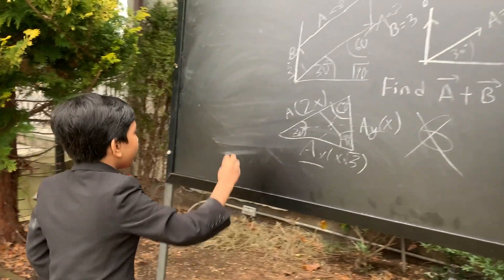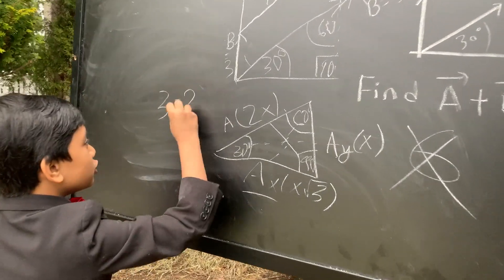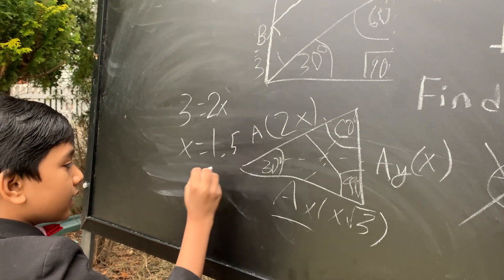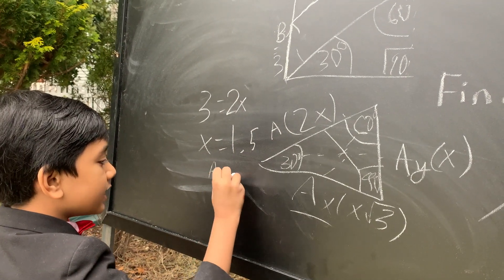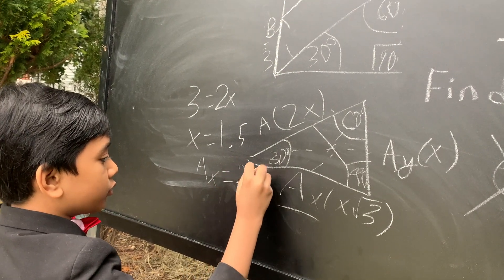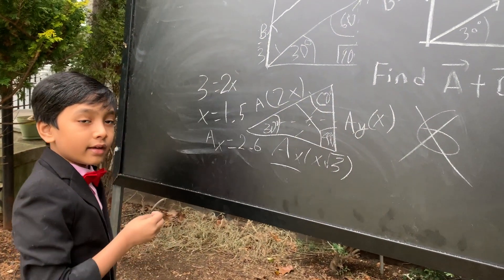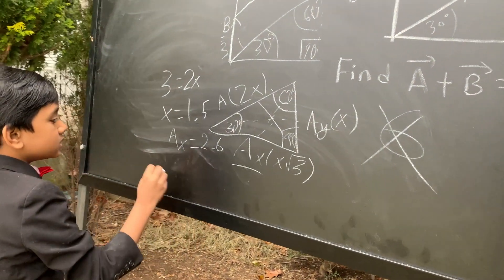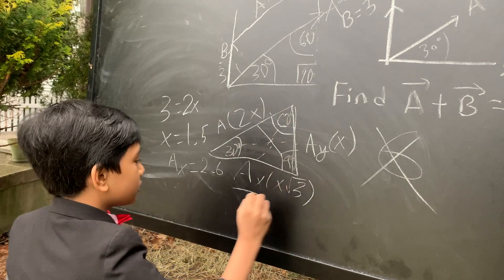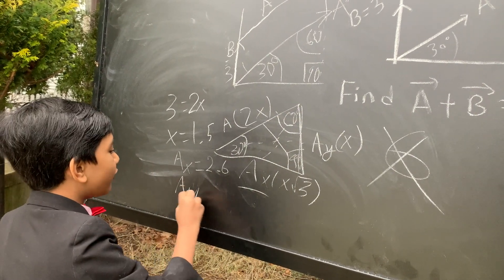So, if A is 3 and 3 is 2X, that means X is 1.5. Meaning that AX is equal to 1.5 root 3, or somewhere around 2.6. I believe it's 2.59808. That means that AY, A Y is just going to be X, or 1.5.